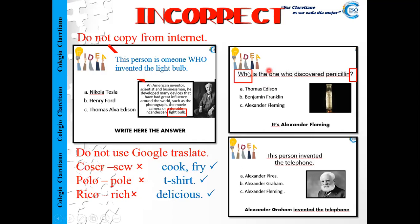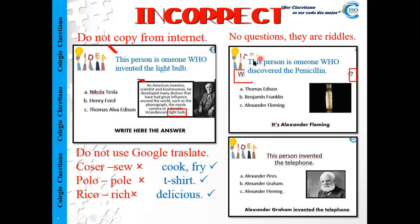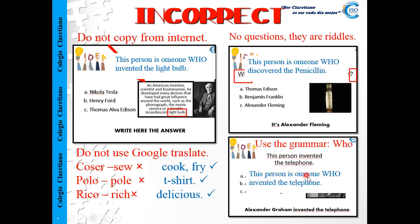Another mistake: don't write questions. The teacher doesn't want questions — you need to create a riddle. A riddle looks like this: 'This person is someone who discovered the penicillin.' You need to use the relative pronoun 'who.' This person is someone who invented the telephone. That is a riddle.